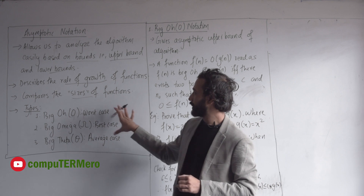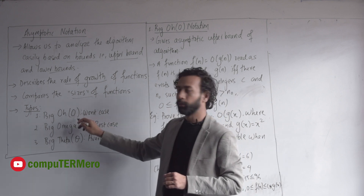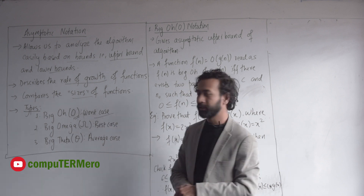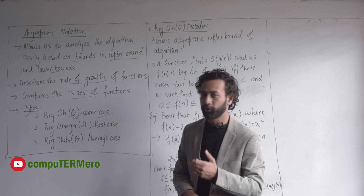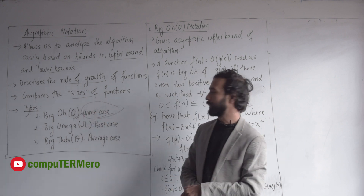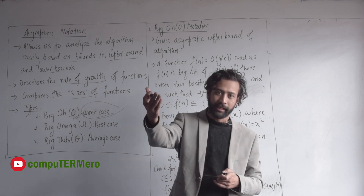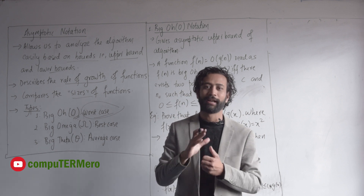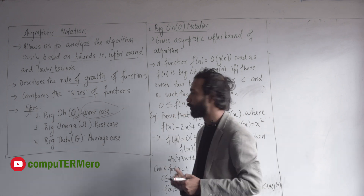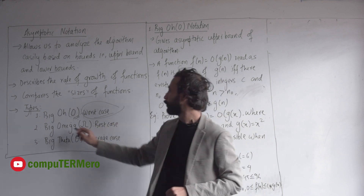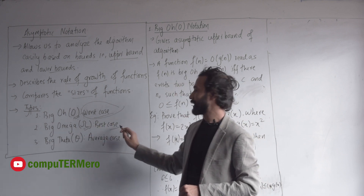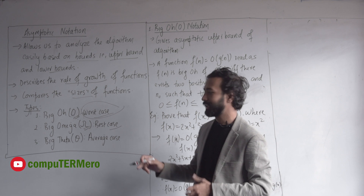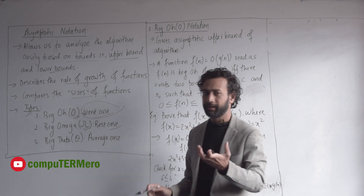Asymptotic notation is basically three types. This is Big O — this is the worst case. Big Omega — the omega symbol represents the best case. And the third is tight bound and average case analysis.